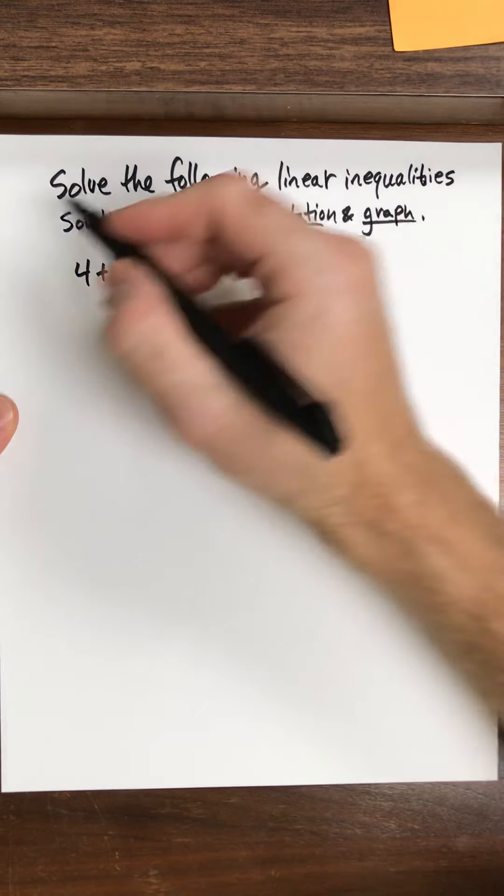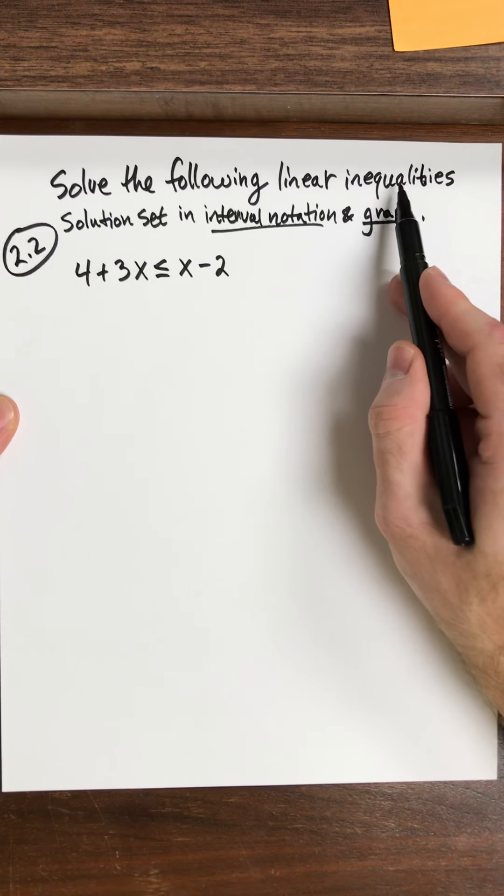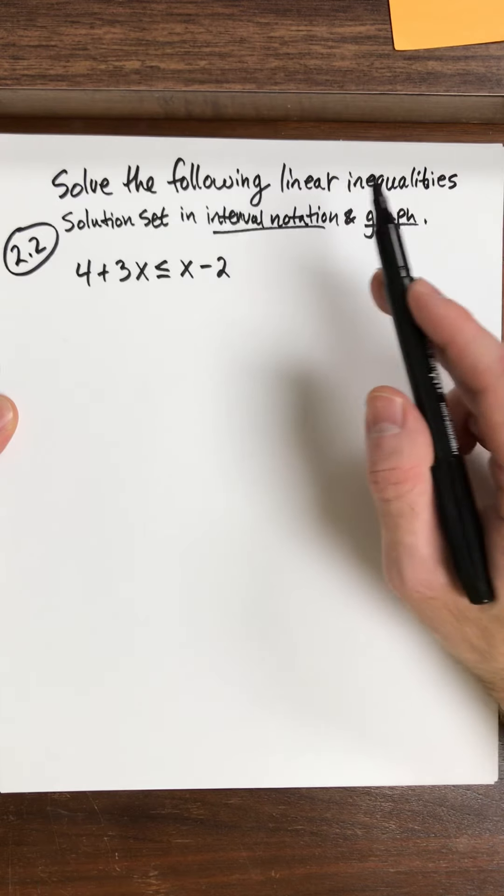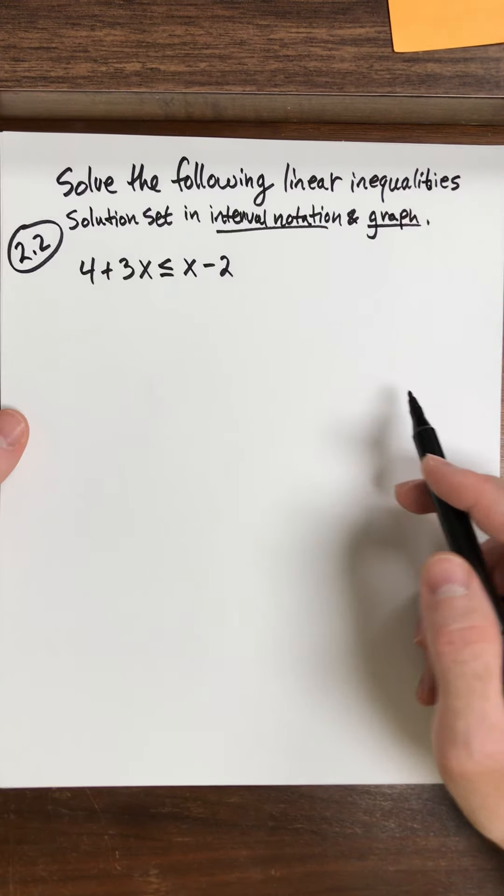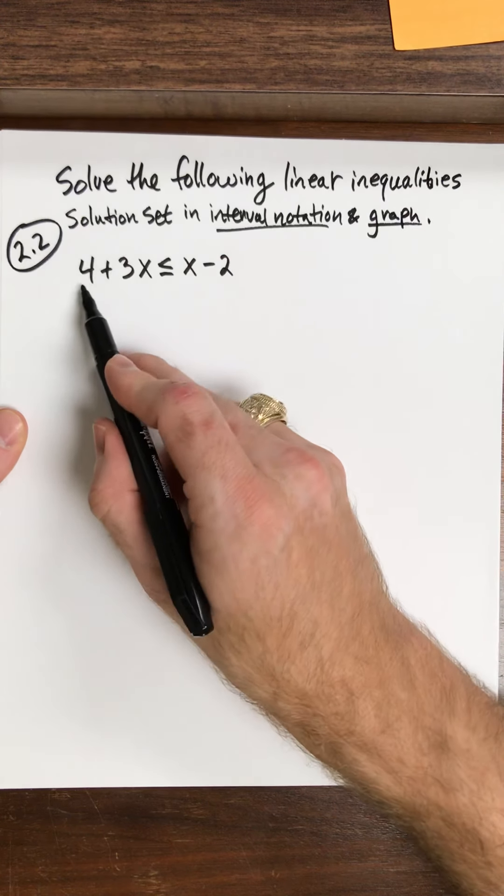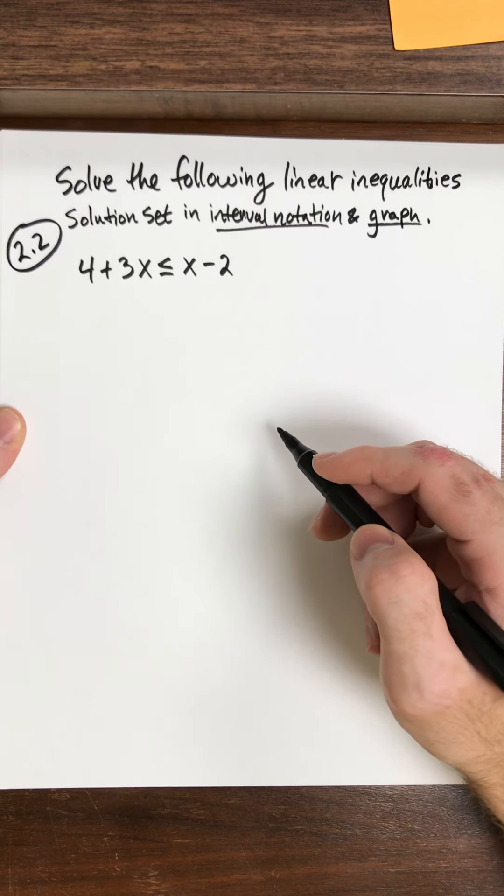Okay, so this is section 2.2. We're going to solve the following linear inequalities and I'm going to do the solution set as interval notation and then I'm going to graph it. Okay, so let's solve here. All right, so I have 4 plus 3x is less than or equal to x minus 2.